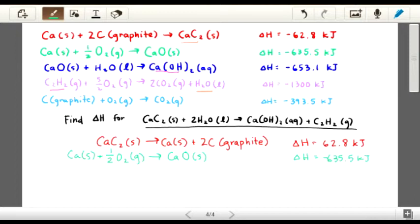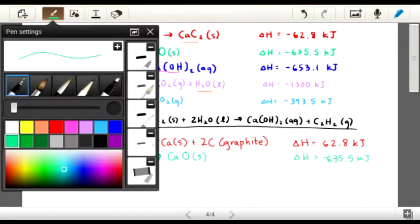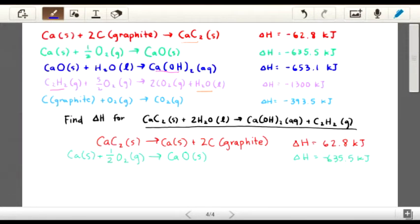And also, the third equation, the blue equation, also should be normal because the Ca on the left side will be cancelling with the Ca on the right side of the green equation. So I will write that down below, and the enthalpy change will remain the same.